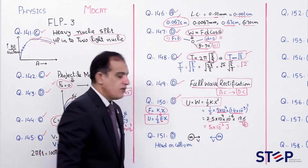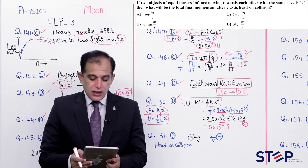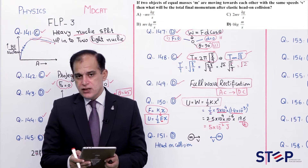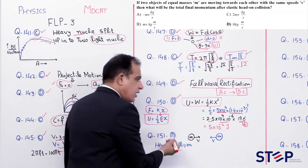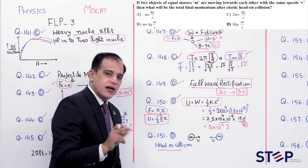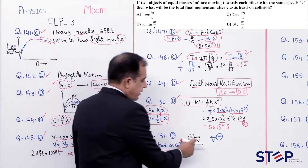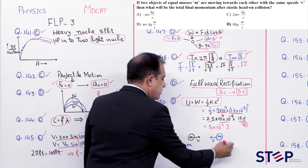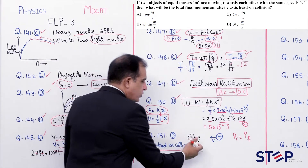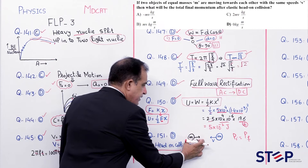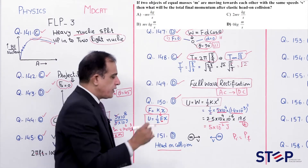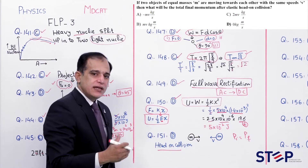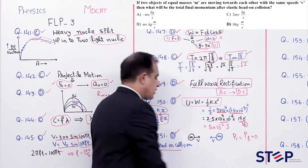Question number 151: Two objects of equal masses moving towards each other with same speed - elastic head-on collision. Total momentum before: mv + (-mv) = 0. By conservation of momentum, total final momentum also = 0. Correct option: Delta.